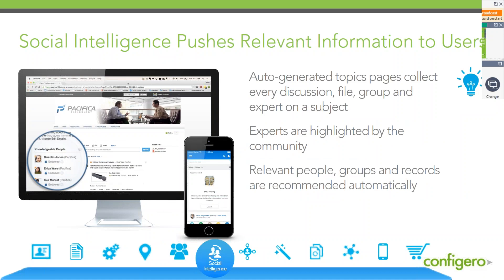From a social perspective, social intelligence pushes relevant information to users — being able to go into the community and automatically generate topics for a particular discussion, or communicate with an expert on that particular subject. Things that are more relevant to actual users will make it more efficient and effective for folks to use your Community Cloud.